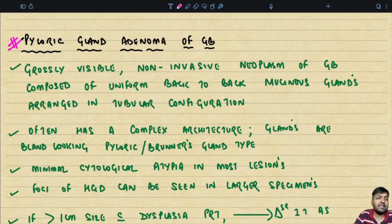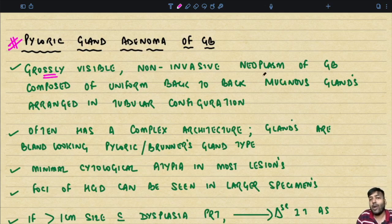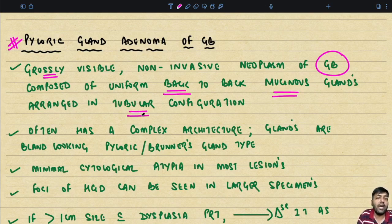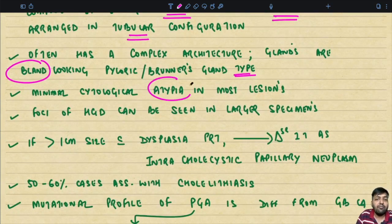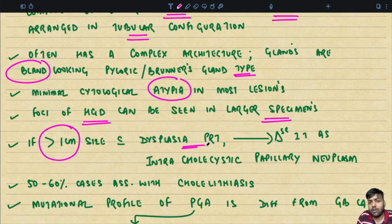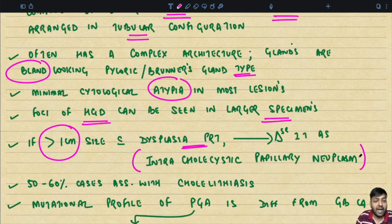The first entity is the pyloric gland adenoma of the gallbladder. Remember, it is not a precursor lesion — it is a benign tumor. It is a grossly visible non-invasive neoplasm composed of uniform back-to-back mucinous glands arranged in a tubular configuration, often with complex architecture. The glands are bland-looking, pyloric or Brunner's gland type, with minimal cytological atypia. High-grade dysplasia can be seen in larger specimens. Around 50 to 60 percent of cases are associated with cholelithiasis.